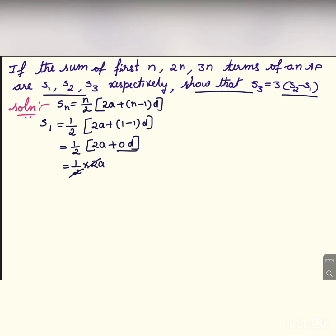0 into d is 0 itself. 2 and 2 can be cancelled. Therefore, s1 is equal to a. Let us take this as equation 1.